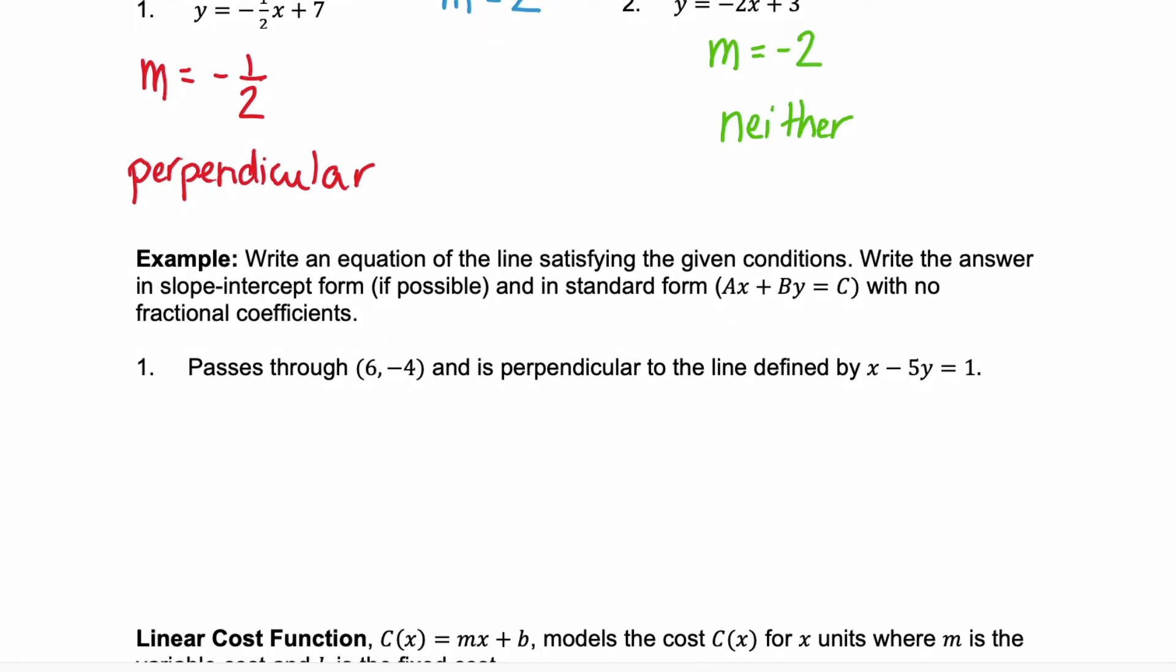What if you're given some conditions for a line and you need to write the equation for that line in slope intercept form, and then we're going to convert it into standard form. So in this example, we want a line that passes through the point 6, negative 4 and it needs to be perpendicular to the given line x minus 5y equals 1. Well to be perpendicular, we need to know the slope of the given line. And to find the slope of the given line, we need to put it in slope intercept form. So we need to solve this or rewrite it for y.